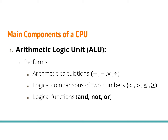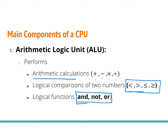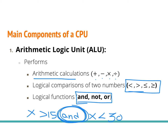There are five main components of the CPU. The first is called the arithmetic logic unit, or the ALU. What the ALU does is it performs basic calculations, comparisons, and logical functions. It can perform arithmetic computations — addition, subtraction, multiplication, and division. It can do logical comparisons of two numbers using inequalities, and it also does logical functions like AND, NOT, and OR. For example, if you wanted something to happen when x is greater than 15 AND x is less than 30, the AND logical function allows you to do that.